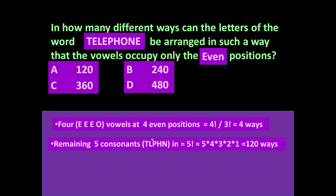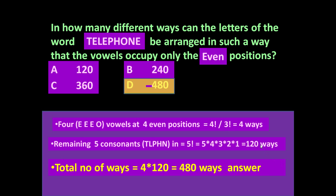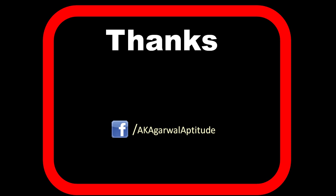The remaining consonants T, L, P, H, and N — there is no repetition among these five consonants, so they can be arranged in factorial five ways. Factorial five equals five into four into three into two into one, which is 120 ways. So the total number of ways is four into 120, which equals 480. The letters can be arranged in 480 ways such that vowels are at the even positions only. Thank you very much for watching this video. You can also follow me on Facebook.